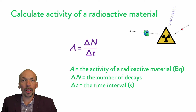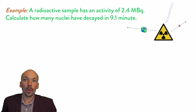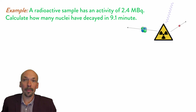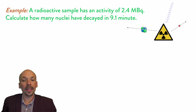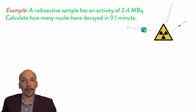To see how I can use this equation, I will now have three example questions. The first question: a radioactive sample has an activity of 2.4 MBq. Calculate how many nuclei have decayed in 9.1 minutes. Try this for yourself and pause the video now.